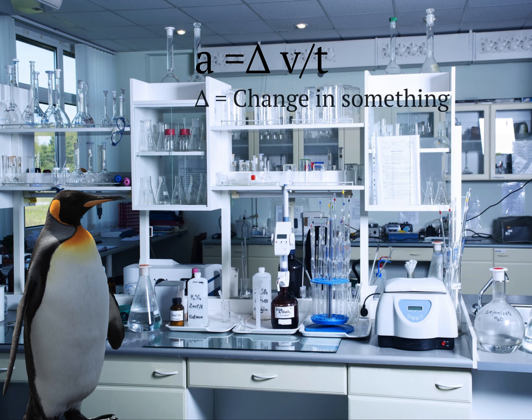It means change in. So delta V means the change in velocity. This can be positive if the velocity gets bigger or negative if it gets smaller. This is measured in meters per second. Time is just T and it's in seconds. Let's have a go.